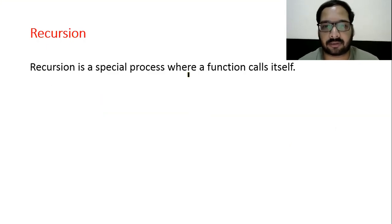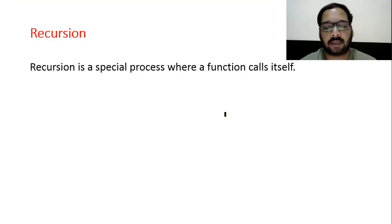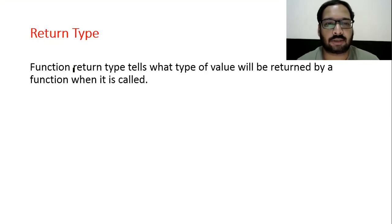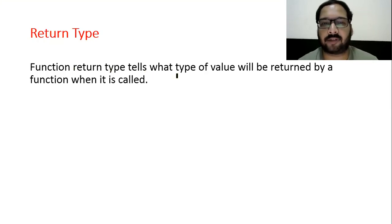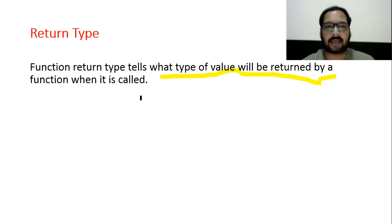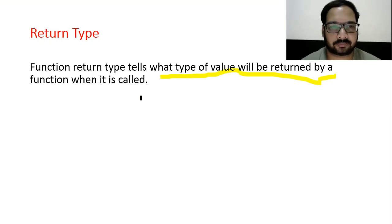Recursion is a special process where a function calls itself. If a function calls itself, it is called a recursive process. Return type: whenever you create a function, the function has a return type which tells what type of value will be returned by a function when it is called. It can be int, float, char, void, or anything.